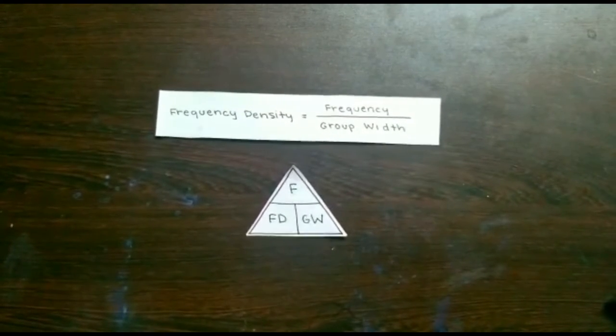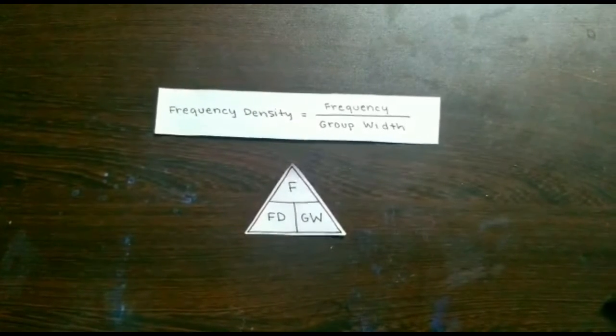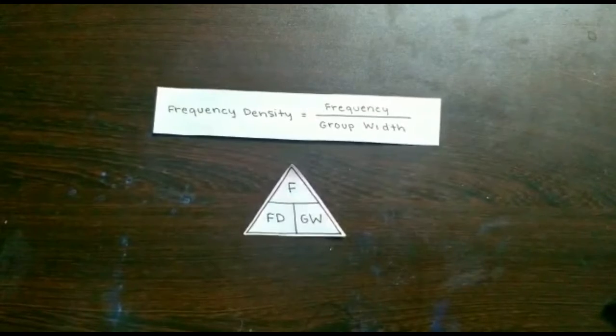We can make a formula triangle for this. F represents frequency, FD is frequency density, and GW is group width. So frequency density is frequency over group width.